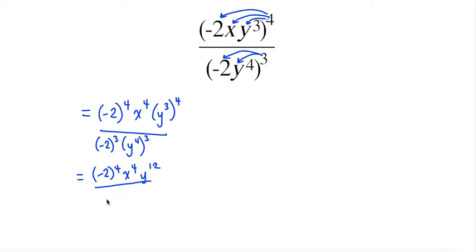For my denominator, I have my negative 2 to the exponent 3, and then I have my power of a power for my base of y. 4 times 3 is 12.